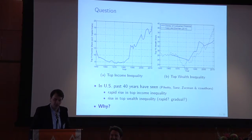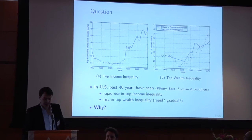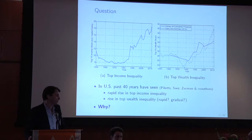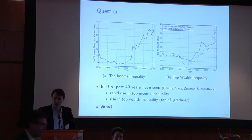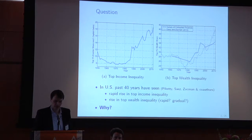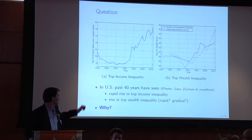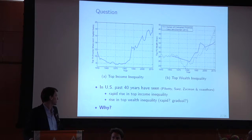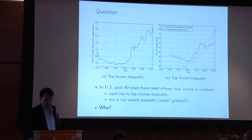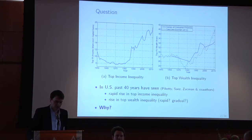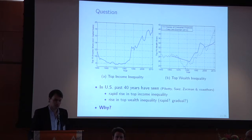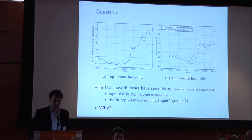In the US, the past 40 years have seen a rapid rise in top income inequality and arguably also in top wealth inequality, which Gabriel just talked about. On the left hand side, I'm plotting the top 1% income share over time. You can see that in 1980 it was approximately 8%, and nowadays it's almost 20% — a massive increase.